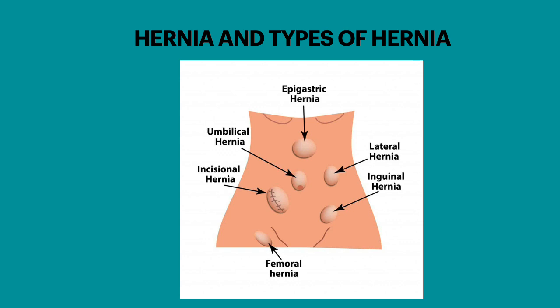Abdominal hernias are common in men having heavy manual jobs. In hernia, a section of intestine may become twisted and get trapped inside the bulge. The blood supply may be cut off. This is known as strangulated hernia. If it causes severe pain, immediate surgery is needed.